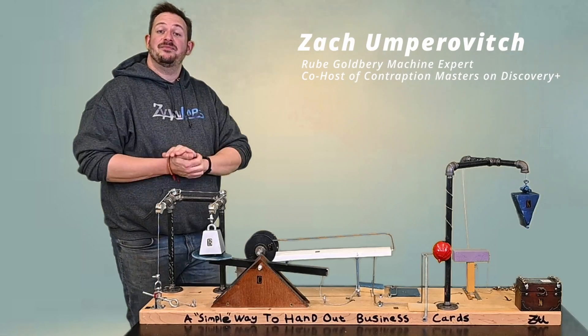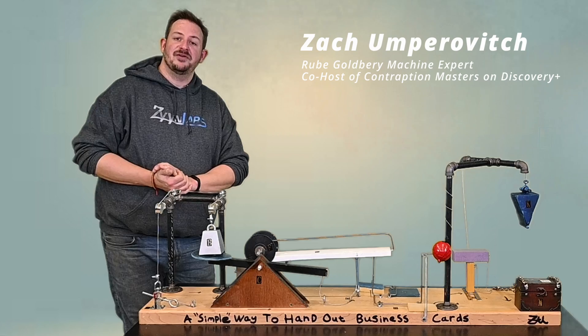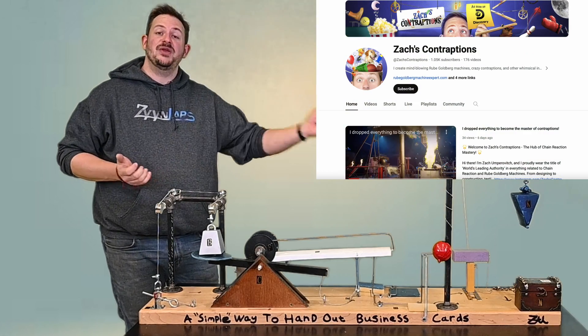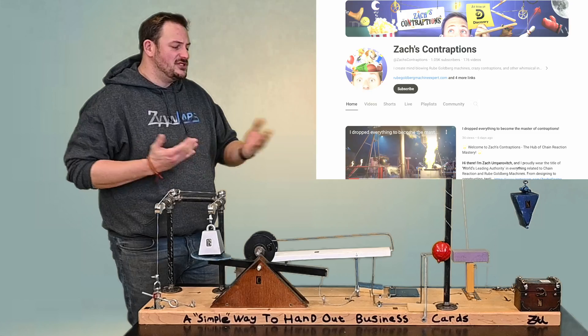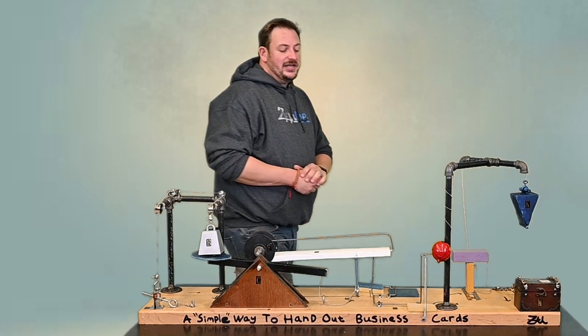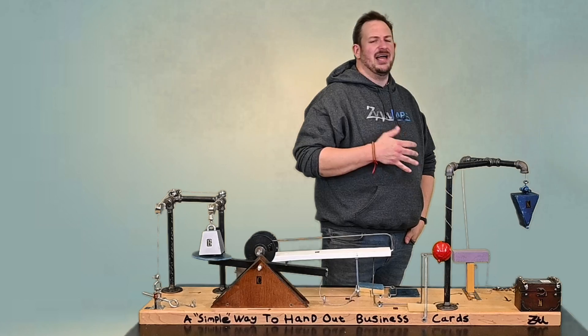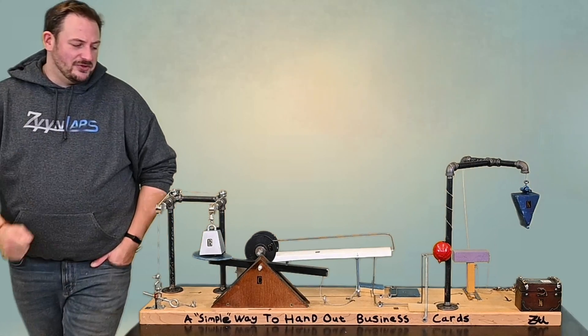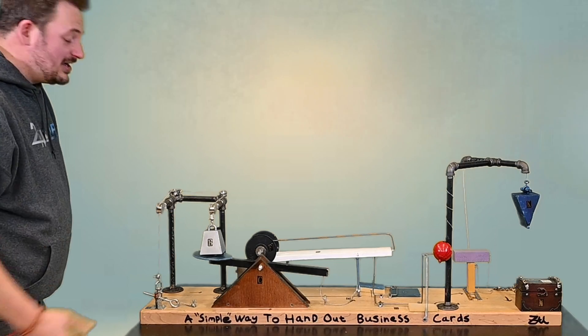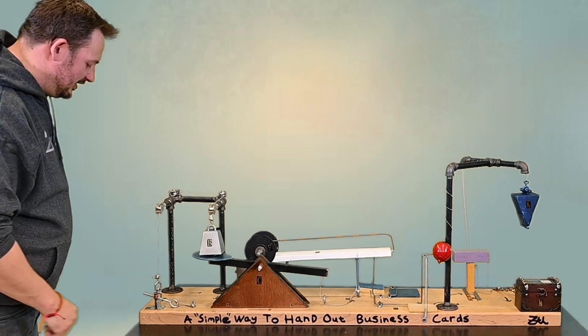My name is Zach Amparovic. I am the Rube Goldberg machine expert. I'm also co-host of Contraption Masters on Discovery Plus. In front of me, we have a Rube Goldberg machine that solves the simple task of something kind of close to me. I needed a way to pass out my business cards. Often I'm at a live event, I'm doing a show, what have you. So this seemed like the more fun way to pass out my business cards, also using all six simple machines, because why not be a little educational along the way.